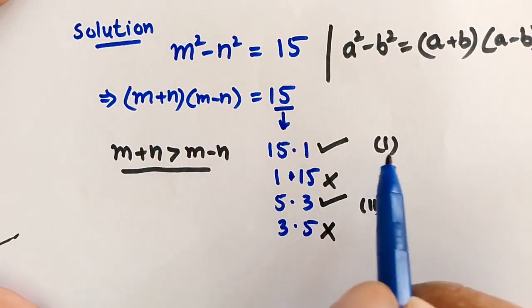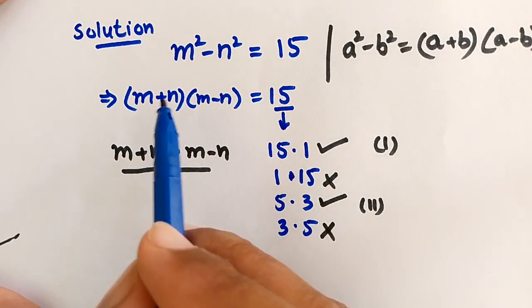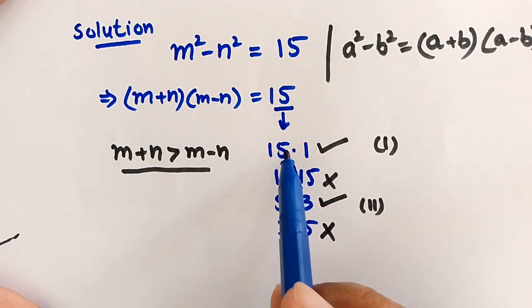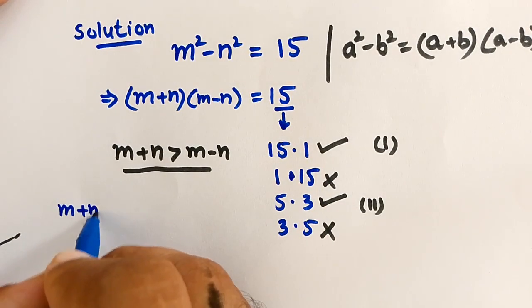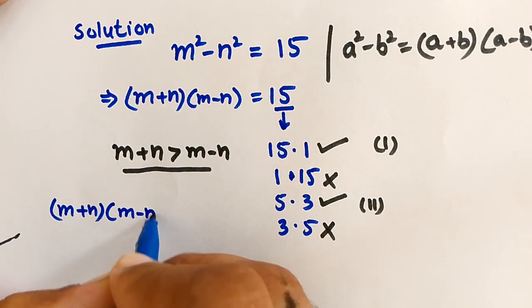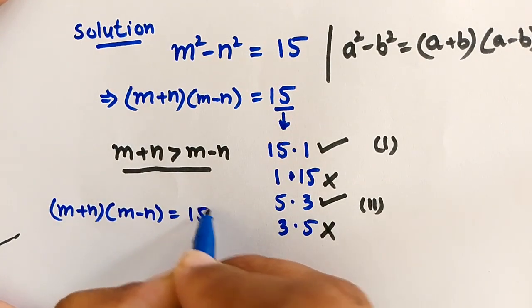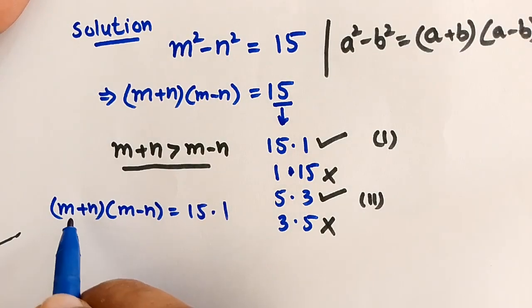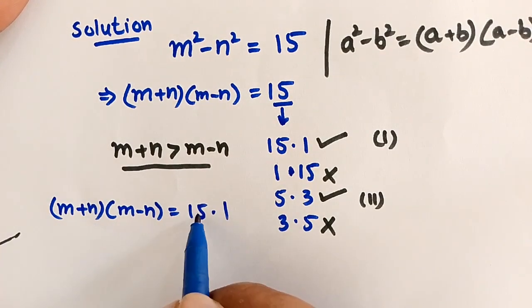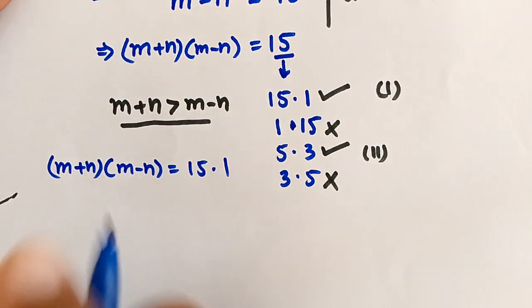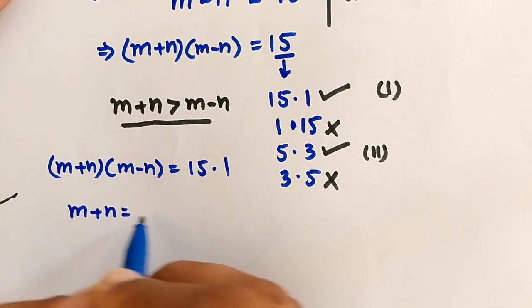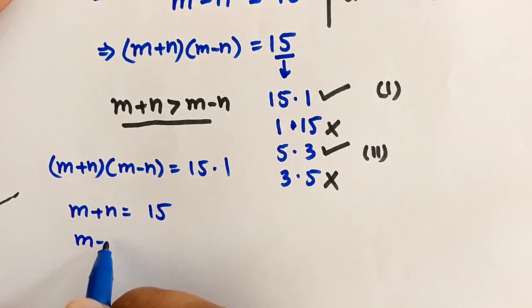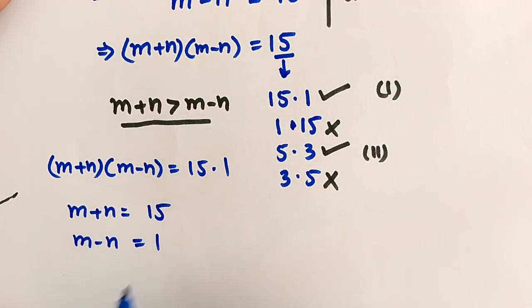For Case 1: (m+n)(m-n) = 15×1. From this, m+n = 15 and m-n = 1.